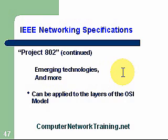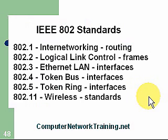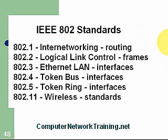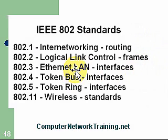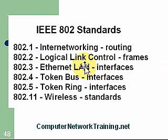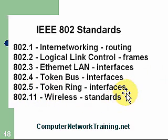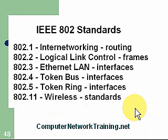Project 802 can also be applied to the layers of the OSI model. Some of the subcategories include: 802.1 for internetworking and routing; 802.2 for logical link control and frames; 802.3 for Ethernet LAN — everything involved with Ethernet LAN comes under 802.3; 802.5 for token ring; and 802.11 for wireless standards. You can see this continues to grow as new technologies are introduced.